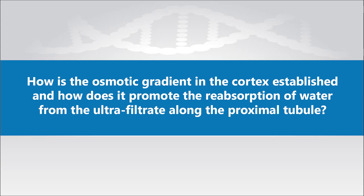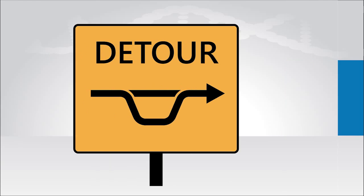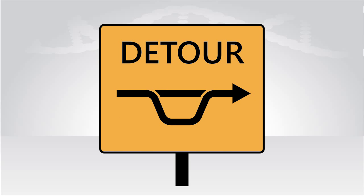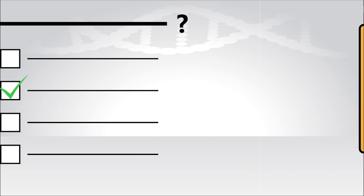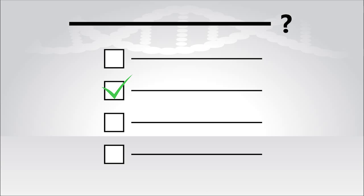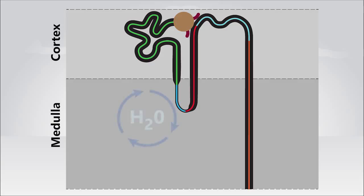Now, talking about the cortical interstitium and proximal tubule might seem like a diversion from the countercurrent multiplier, but it's not. Rather, many tests will ask questions about the countercurrent multiplier in relationship to how water is reabsorbed along the proximal convoluted tubule.